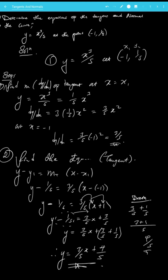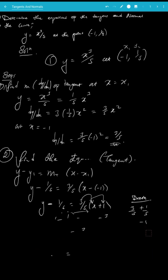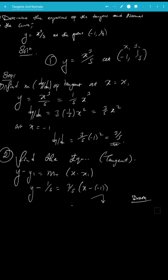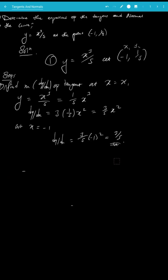Now that's how you find the equation of the tangent. For the normal, we do basically the same thing but slightly differently. We already have the gradient of the tangent, so step three is to find the gradient of the normal.